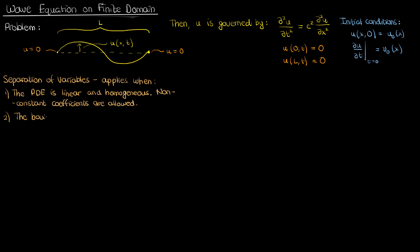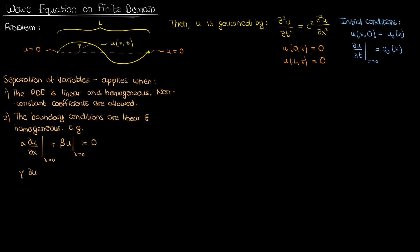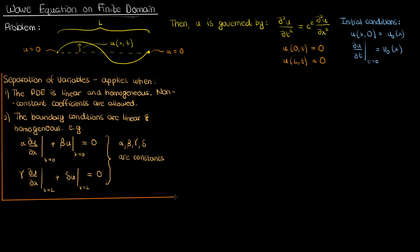We also want the boundary conditions to be linear and homogeneous. So for example these two boundary conditions, the most general ones possible that I've written here, one boundary condition is at x equals 0 and the other is at x equals L, where alpha, beta, gamma, and delta are constants. These two boundary conditions both satisfy the linear and homogeneous requirement.